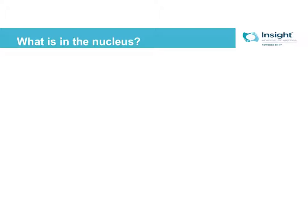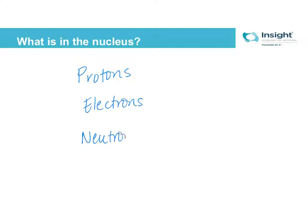So quick review — what's in the nucleus? We know that atoms are made up of protons, electrons, and neutrons. But not all of these are in the nucleus. Neutrons and protons are; electrons are outside. So let's dig a little deeper into what protons and neutrons look like.